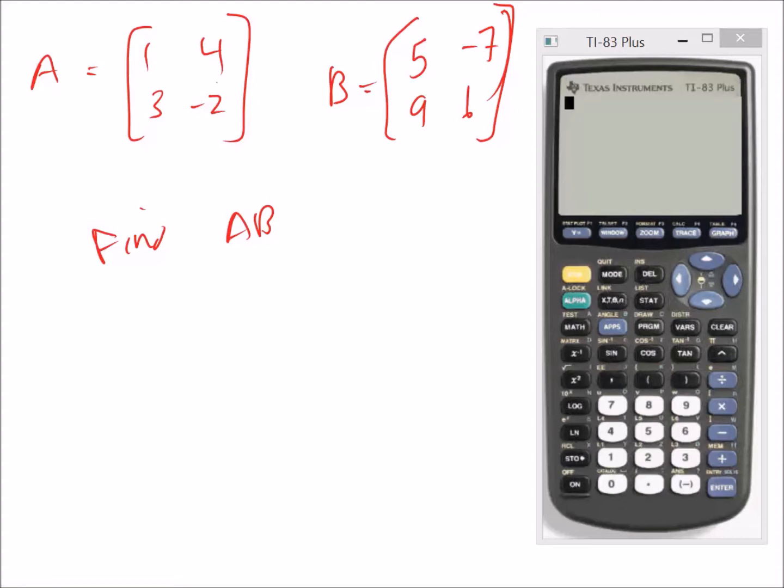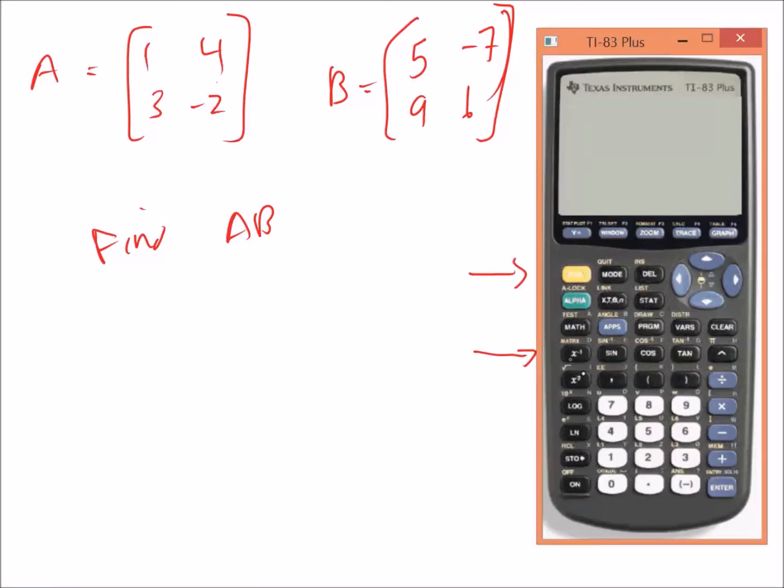So what we're going to do is in our calculator we're going to set up these matrices and then just multiply them together. So the way to do this is you get second, matrix, and you go over to edit. So I'd already done this previously, but I'll show you how to type it in. You edit it, you say matrix A is a 2 by 2, so you hit 2 enter, 2 enter.